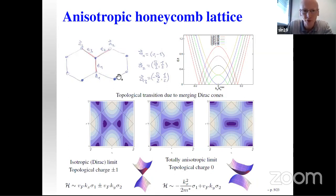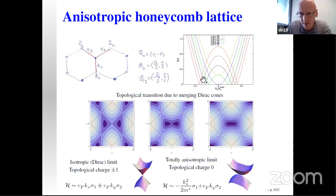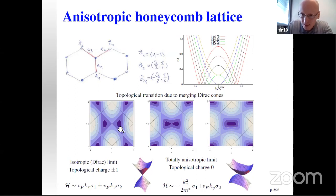To introduce anisotropy into the lattice, I assume one hopping parameter becomes larger than the other two. Without loss of generality, I will always take t1 as larger in the so-called armchair configuration, applied along the y-direction. If I increase t1 beyond the isotropic value of t, what I can see is that both Dirac points start moving toward each other. As the anisotropy increases, this motion continues.